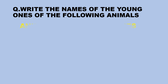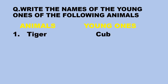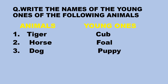We will write the names of the young ones of the animals. The first animal is tiger — the young one of a tiger is called a cub. Number two, horse — the young one of a horse is called a foal. Number three, dog — the young one of a dog is called a puppy.